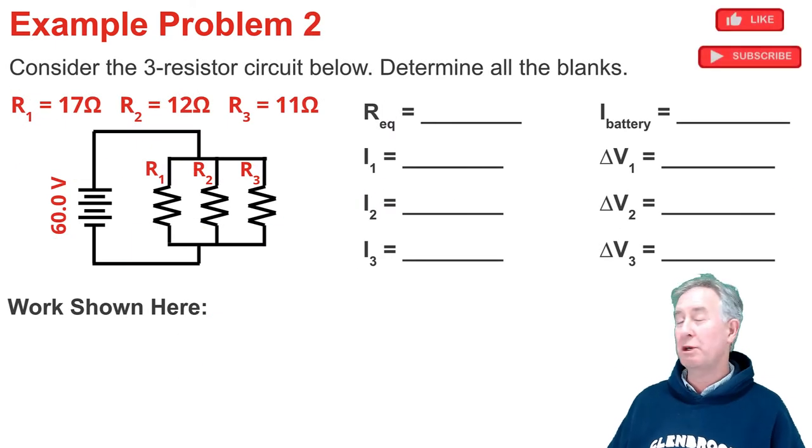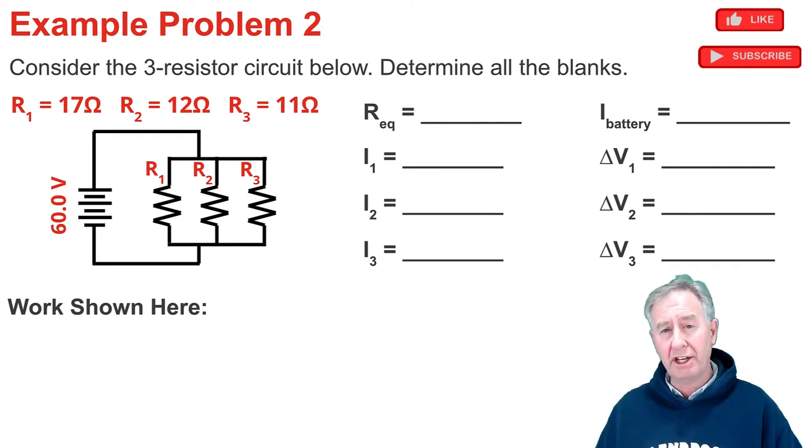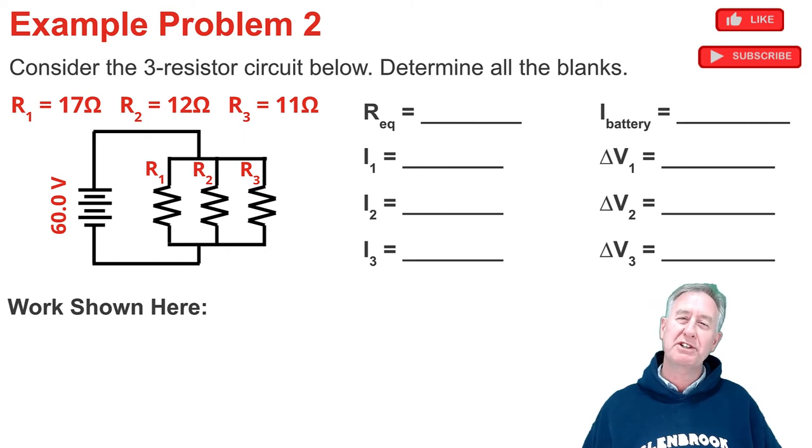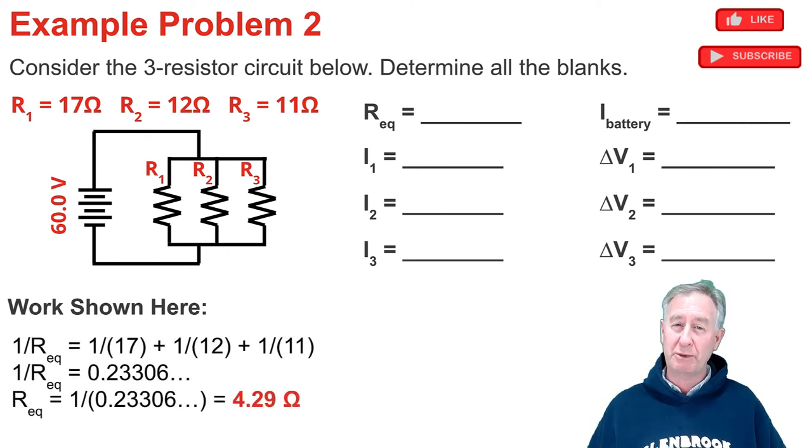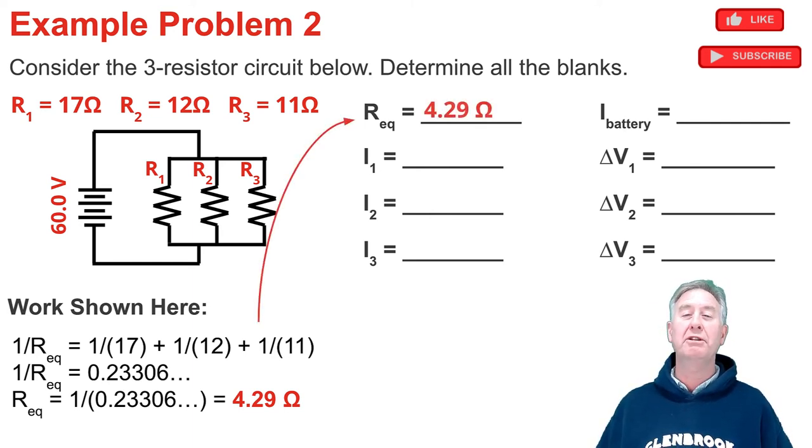Here is a three resistor parallel circuit with a 60-volt battery and resistance values of 17 ohms, 12 ohms, and 11 ohms. And I want to determine all of this. I'm going to begin with the equivalent resistance. So I go 1 over REQ equal 1 over 17 plus 1 over 12 plus 1 over 11. I evaluate the right side of the equation. It comes to 0.23306 and some change. Take the reciprocal of that, and that gives me the equivalent resistance. I can put it in the blank, about 4.29 ohms.